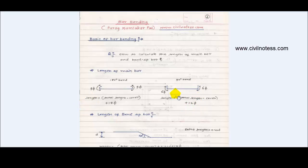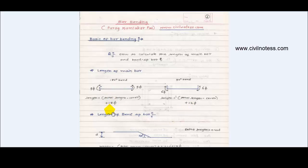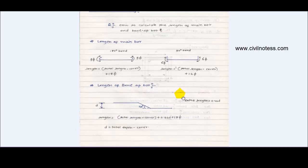The length of the main bar is always total length minus cover, plus the bend allowance value. If it is 180-degree, add 18d (i.e., 18 times bar diameter); if it is 90-degree, add 12d. These values are added to the clear span to get the total bar length.